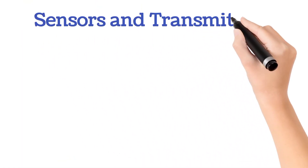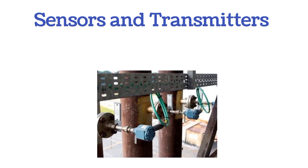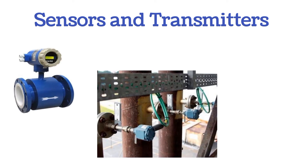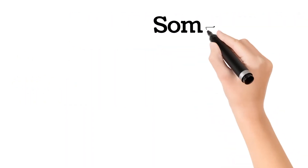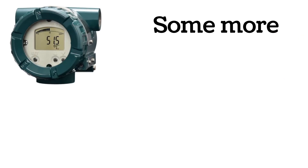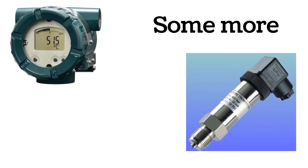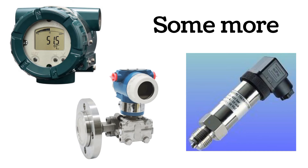Here are some sensors and transmitters used in instrumentation: RTD, thermocouple, various flowmeters like Mag flow meter and mass flow meter, pressure transmitter, temperature transmitter, pen-type pressure transmitter, diaphragm-type pressure transmitter, ultrasonic level transmitter, and many more. You can share in the comments which transmitters and sensors are used in your industry.